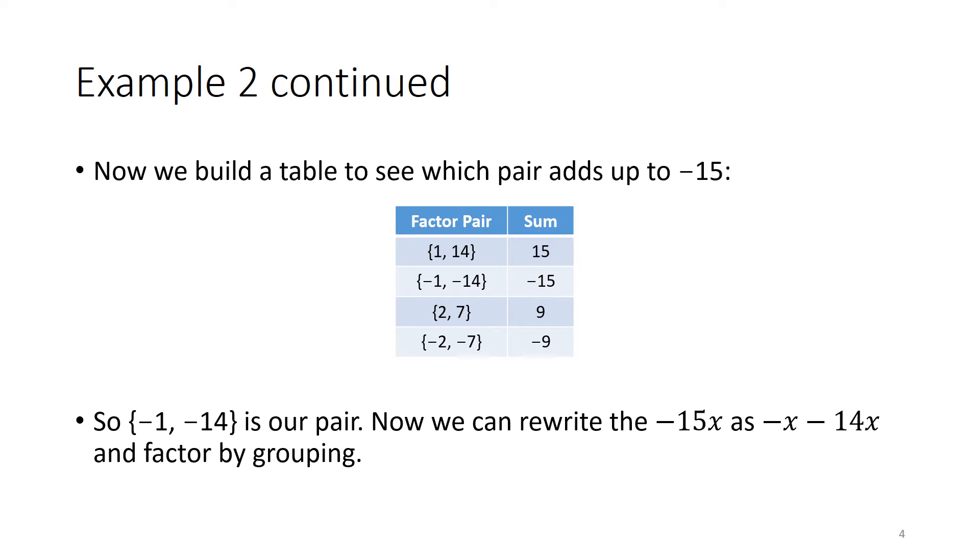Now we build a table to see which pair adds up to negative 15. We have 1 and 14, that adds up to positive 15; negative 1, negative 14, which adds up to negative 15; 2 and 7, which adds up to 9; and negative 2, negative 7, which adds up to negative 9. So negative 1, negative 14 is our pair.